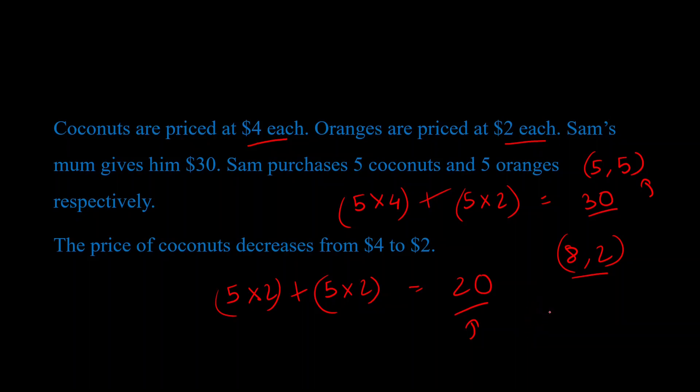And so, using those extra $10, whatever will be his change in demand for coconuts, that is the measure of the income effect. Hopefully, that gives you some intuition. Now, let's take a look at a graph, and that should clear stuff up for you.